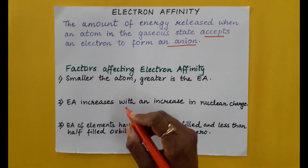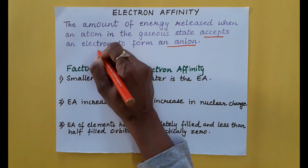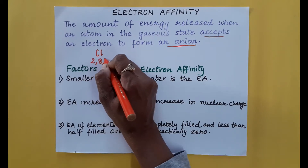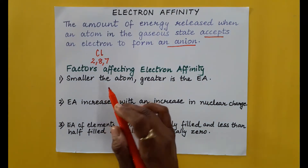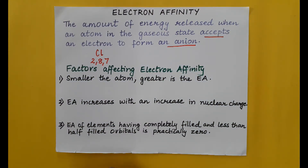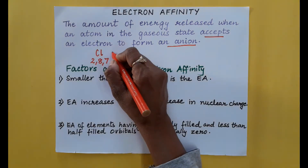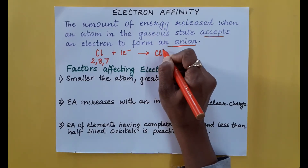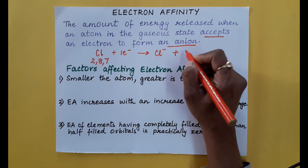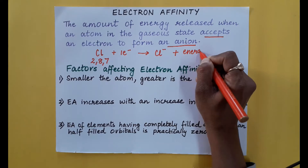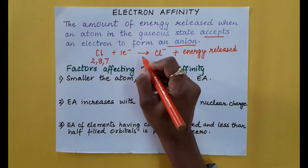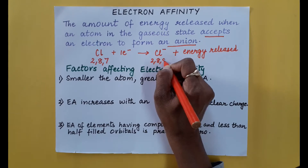To understand this, let us consider a neutral atom — chlorine. Chlorine's electronic configuration is 2, 8, 7. This neutral atom of chlorine needs one electron to become stable. So it releases a certain amount of energy, gains one electron, becomes an anion, and releases energy in the process, becoming a stable anion.